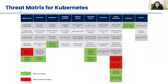This is the threat matrix for Kubernetes from Microsoft. As you can see, there are almost 45 techniques listed here, and each technique can be used to compromise your container. An attacker can do privilege escalations, can move laterally within your containers, and do data exfiltration ultimately using these techniques. Today we'll be focusing on these initial access techniques from a Kubernetes perspective.